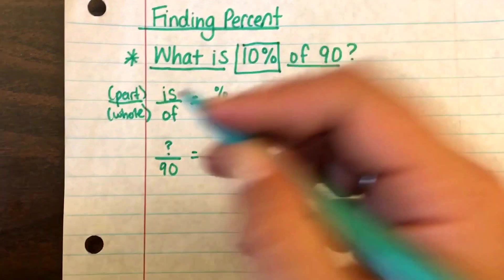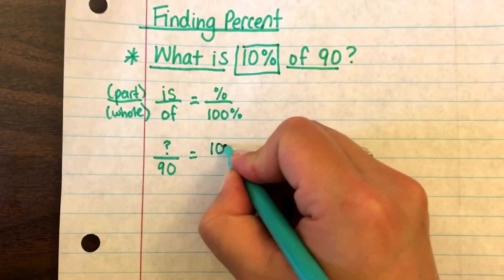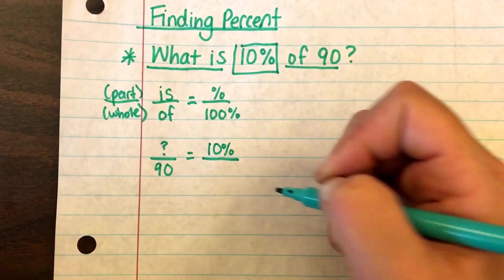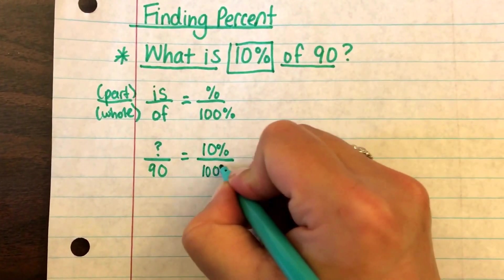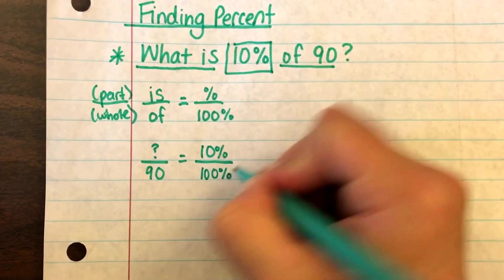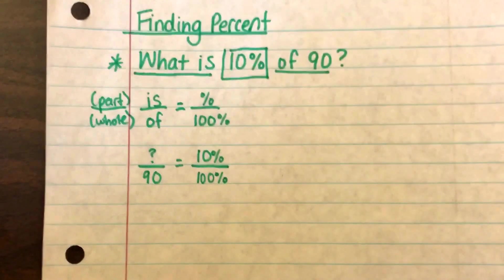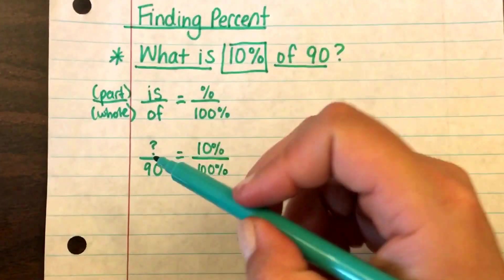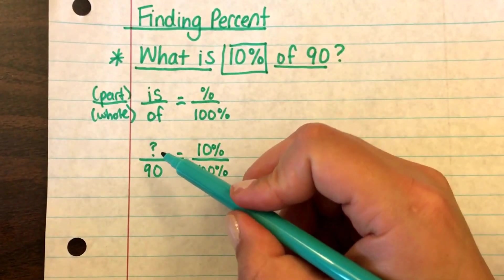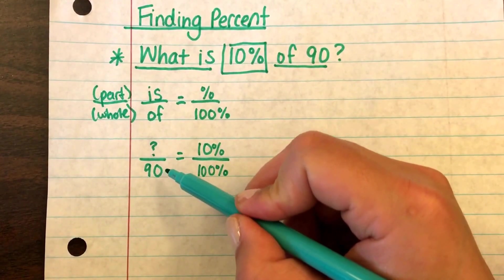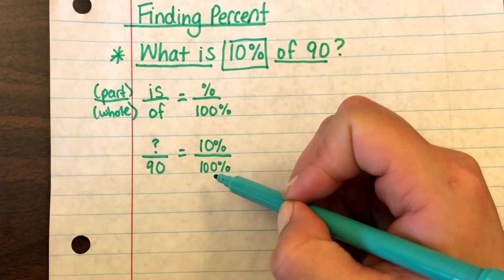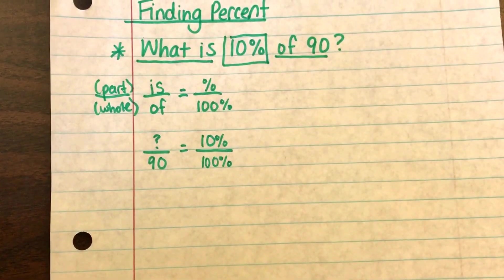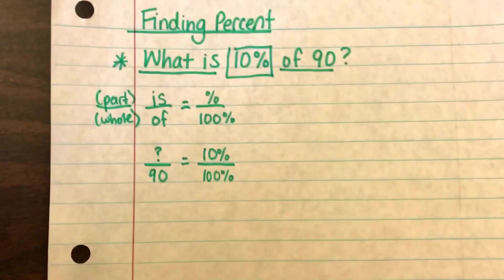We don't know what 'is' is — that's why it's a question mark. 'Of 90' means 90 goes in that spot. We set that equivalent to the percent. The problem tells us 10%, so that part goes on top, and percent is always out of a hundred, so a hundred goes on the bottom. Our proportion is: question mark over 90 equals 10 over 100.